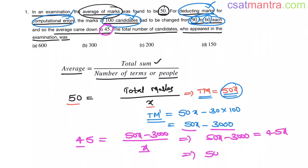Now this is 50x minus 45x equals 3000. 5x equals 3000. x is going to be 600. 5 ones are 5, 600s are. So x equals 600. So total number of candidates who appeared in the examination was 600. A is our answer.